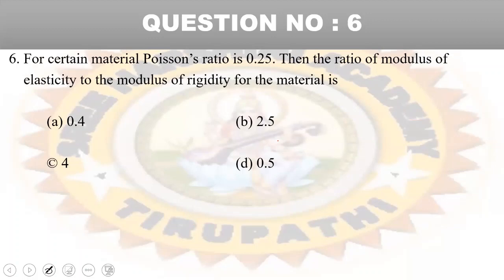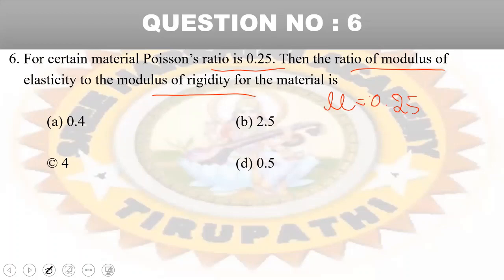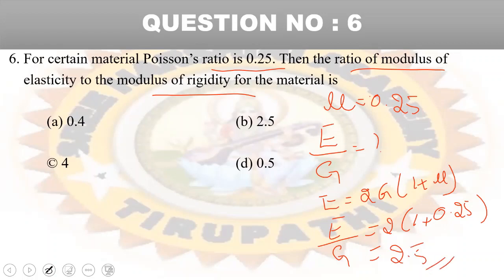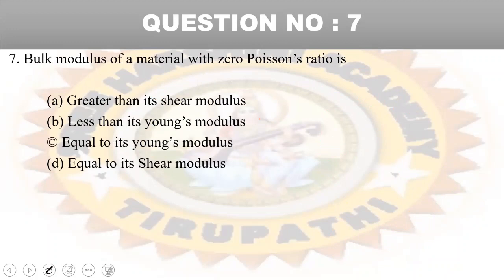Next question: for a material with Poisson's ratio 0.25, find the ratio of modulus of elasticity E to modulus of rigidity G. The relation is E equals 2G into (1 plus mu). So E by G equals 2 into (1 plus 0.25) equals 2 into 1.25 equals 2.5. Option B is the right answer.